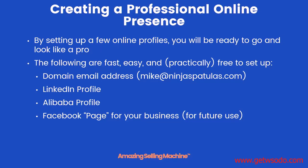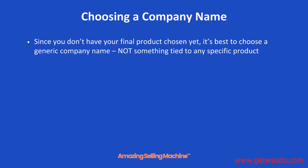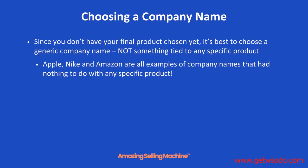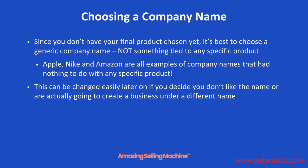You don't have to publish it and you can even change the name of the page, so it doesn't really matter what you call it right now. When choosing a company name to use on these profiles, it's best to have a more generic type of company name for now. One reason is because you haven't chosen your final product yet, and the other is that most big companies don't have a name tied directly to a product. Think about Apple, Nike, and Amazon — those names have nothing to do with the type of products they actually sell. And if you do come up with a different name later and want to incorporate or create an LLC, it's very easy to go into any of these profiles and change it.